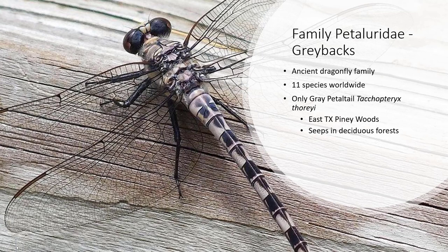Let's get into some of the families of our dragonflies. The dragonflies are in the order Odonata and then the next most descriptive level in taxonomy is a family. We have a family called Petaluridae and these are the graybacks. There are about 11 species worldwide but we only have one of those in the state of Texas and it's mainly found in the East Texas piney woods. They really like seeps in deciduous forests. This is a very old, ancient dragonfly family, pretty gray and black in color. Dragonflies can be very colorful but after they die they'll just turn dark and lose that pretty color, so a lot of people like to take pictures of dragonflies as opposed to collecting them.